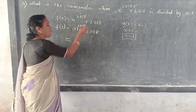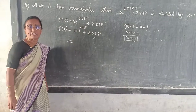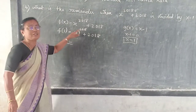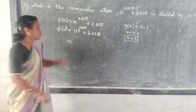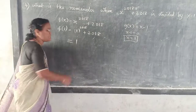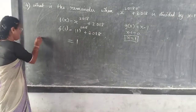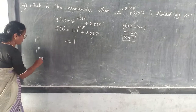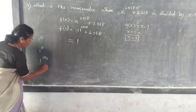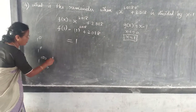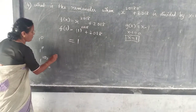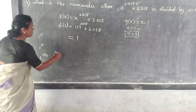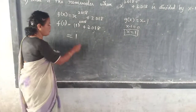1 to the power of 2018 means what? 1. If any power — 1 to the power of 0, 1 to the power of 11, 1 to the power of 1000, 1 to the power of 100, 1 to the power of lakh — whatever it is, the answer is always 1. Understand?